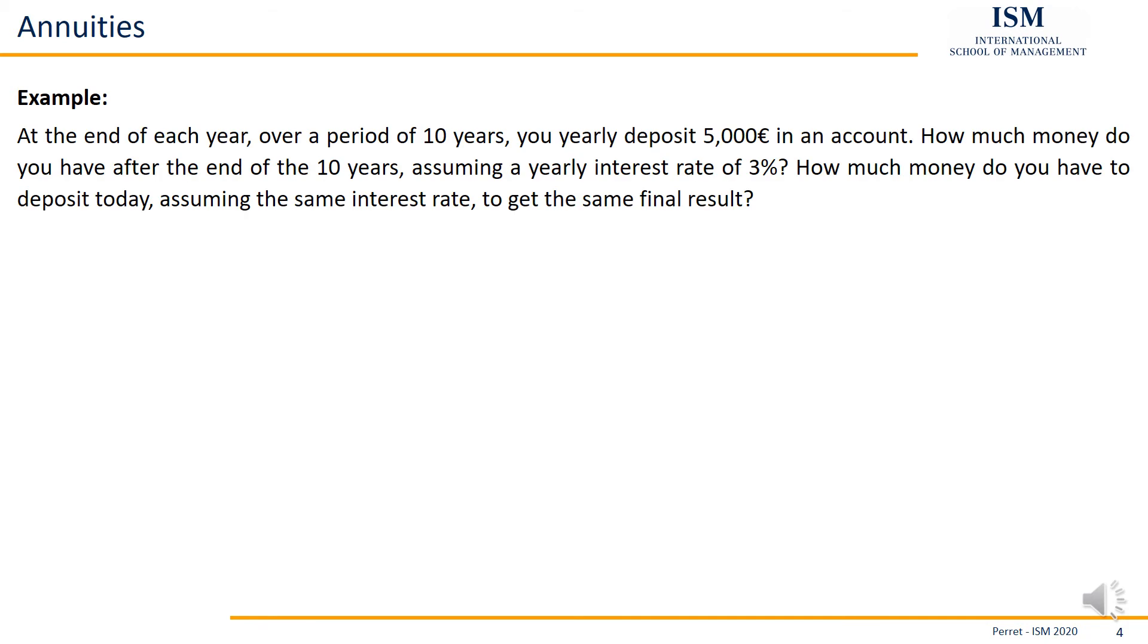So if we take a look at an example, here we have at the end of each year, so we know it's immediate, over the period of 10 years, so we know our number of periods, the N is 10, you yearly deposit 5000 euros in an account. So here the rate is 5000 euros. How much money do you have after the end of the 10 years, assuming a yearly interest rate of 3%? So here, third and final value, 3% the I, or 0.03.